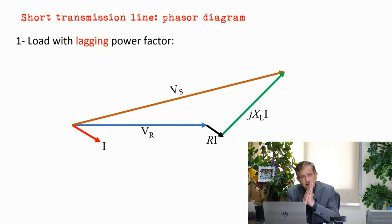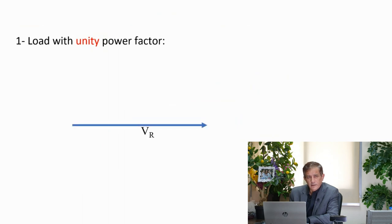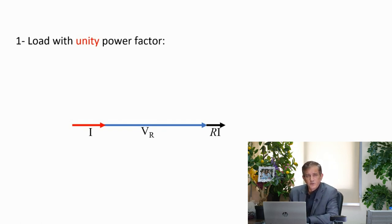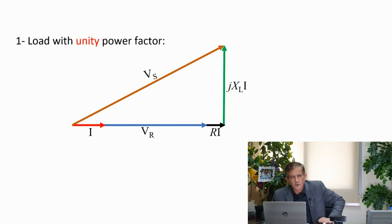From the phasor diagram for lagging power factor, the receiving-end voltage VR is clearly less than the sending-end voltage VS. For unity power factor, the current is in phase with the voltage. We add the IR and jX_L·I drops to VR, and again VS is greater than VR — but not by as much as in the lagging case; there is only a small percentage drop.